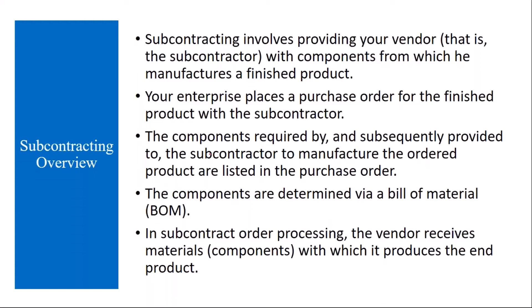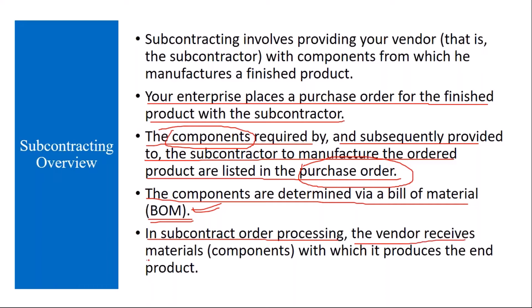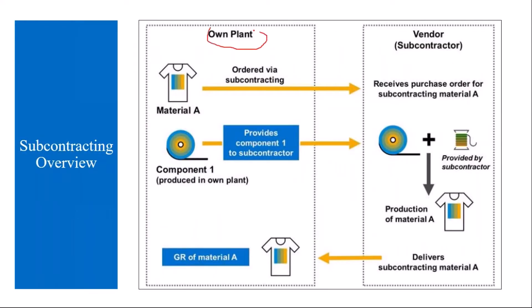Your enterprise places a purchase order for the finished product with the subcontractor. The components required by and subsequently provided to the subcontractor to manufacture the ordered product are listed in the purchase order — I'll show you this. The components are determined by a Bill of Material (BOM). This BOM is normally created by the PP team, but I will show you how to create a BOM as well.